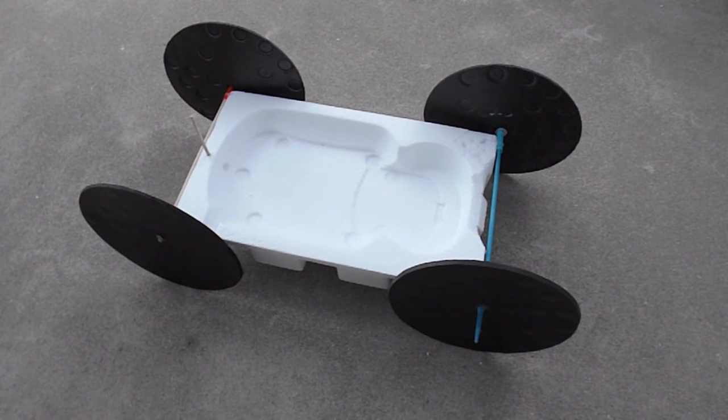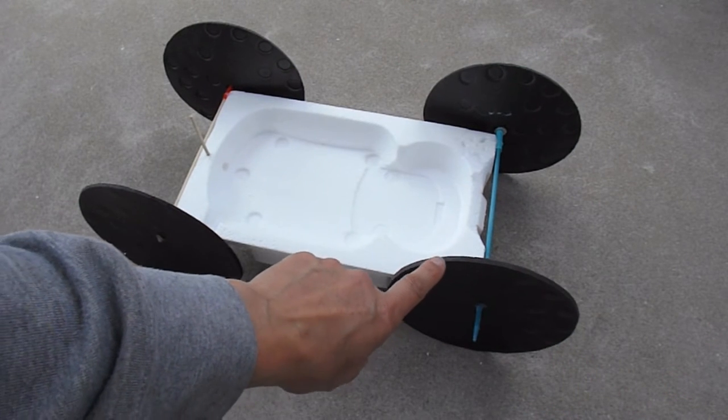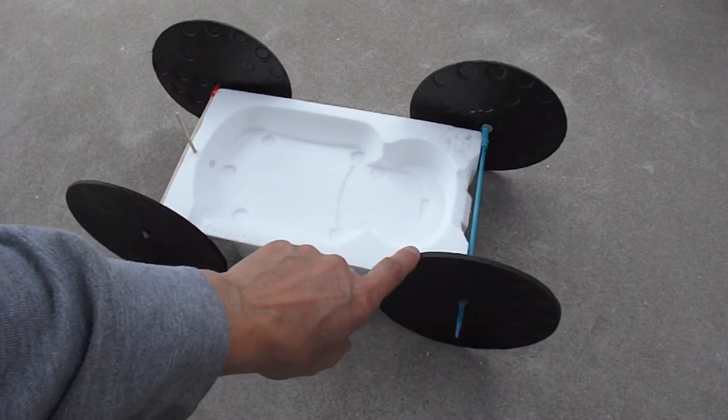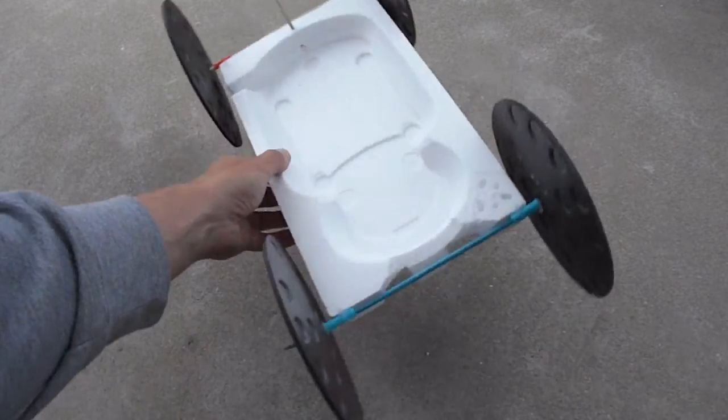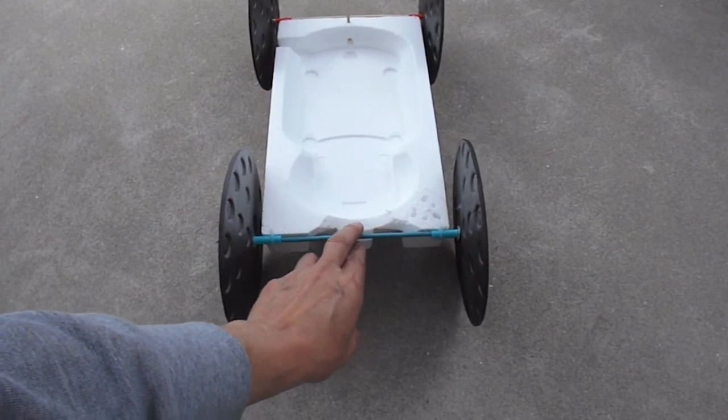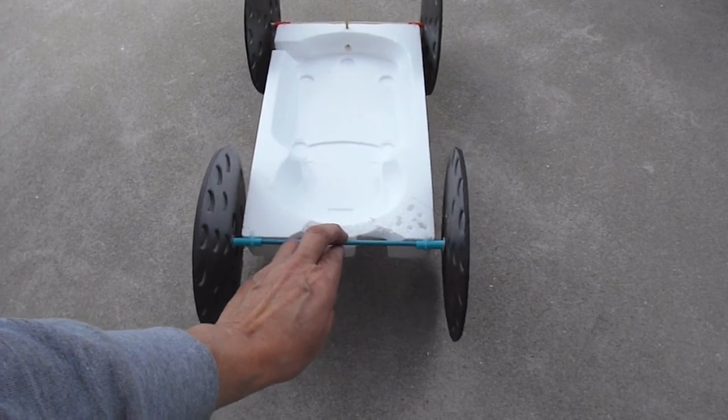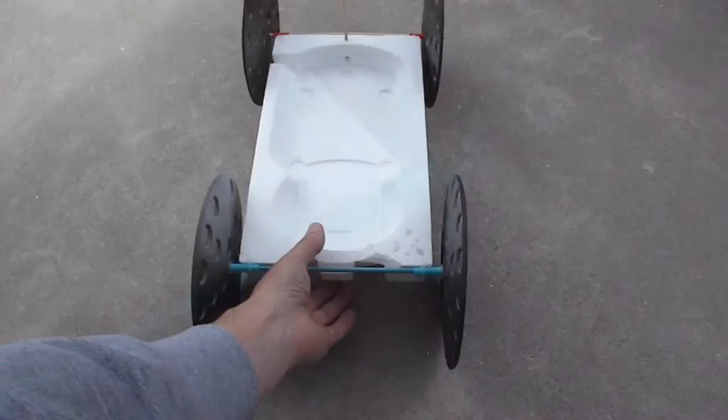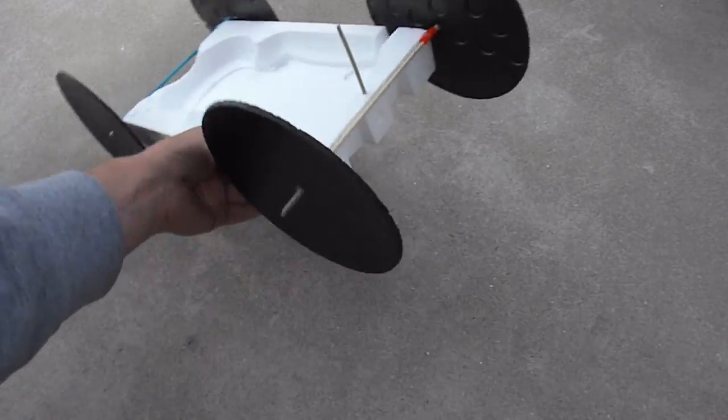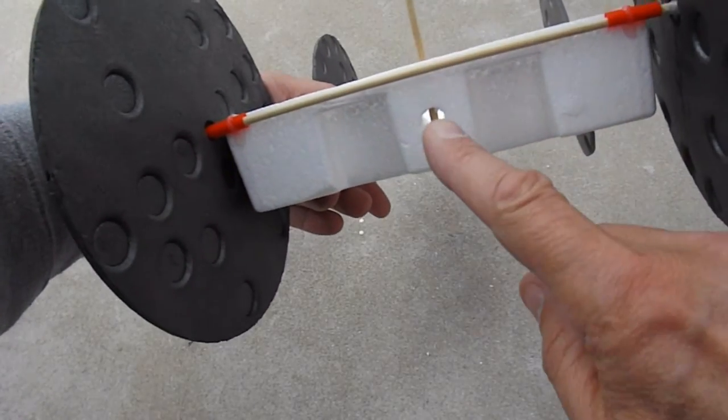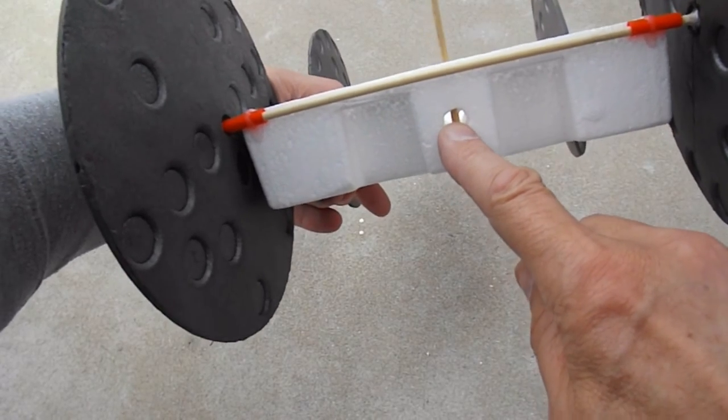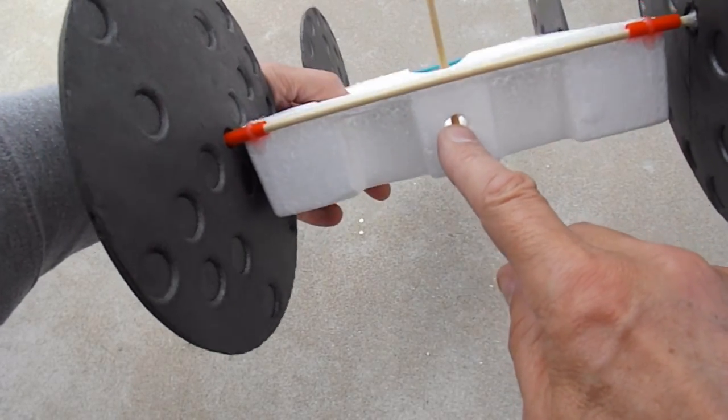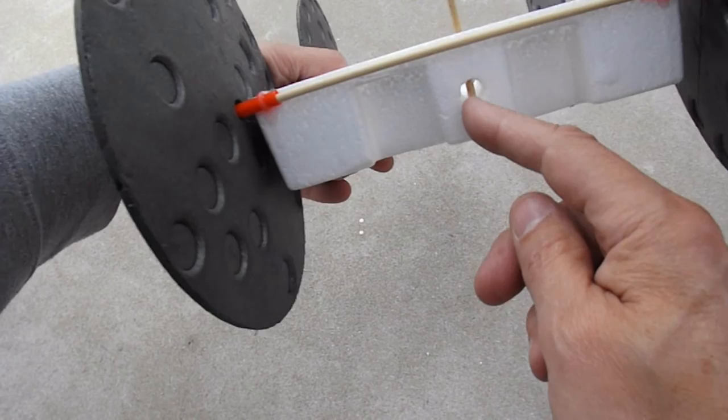There we are, put together. Styrofoam wheels, skewers for axles, drinking straws for axle tubes. I've pushed a little hole through there, so that I can attach the rubber band and hold it in place with another skewer.